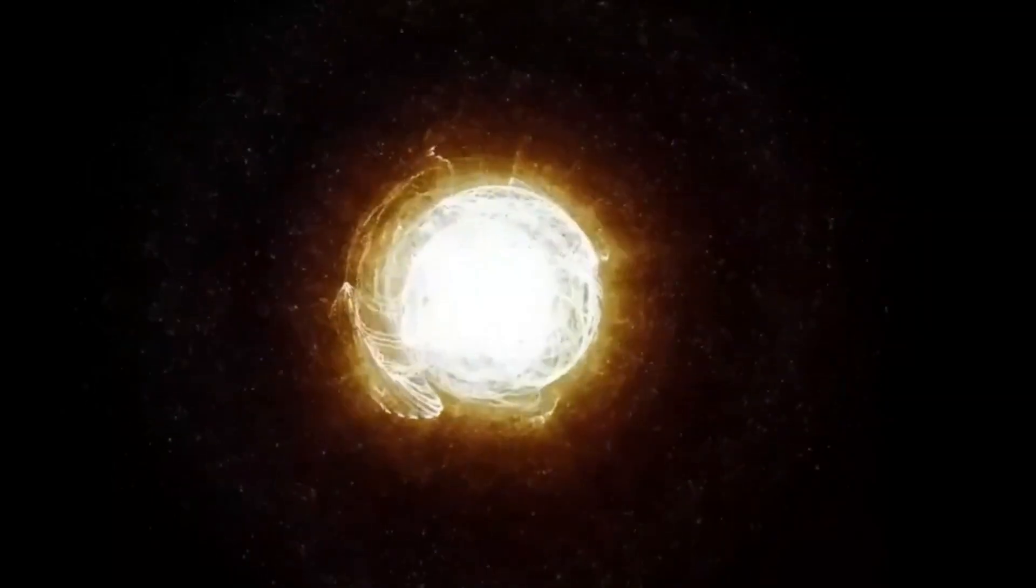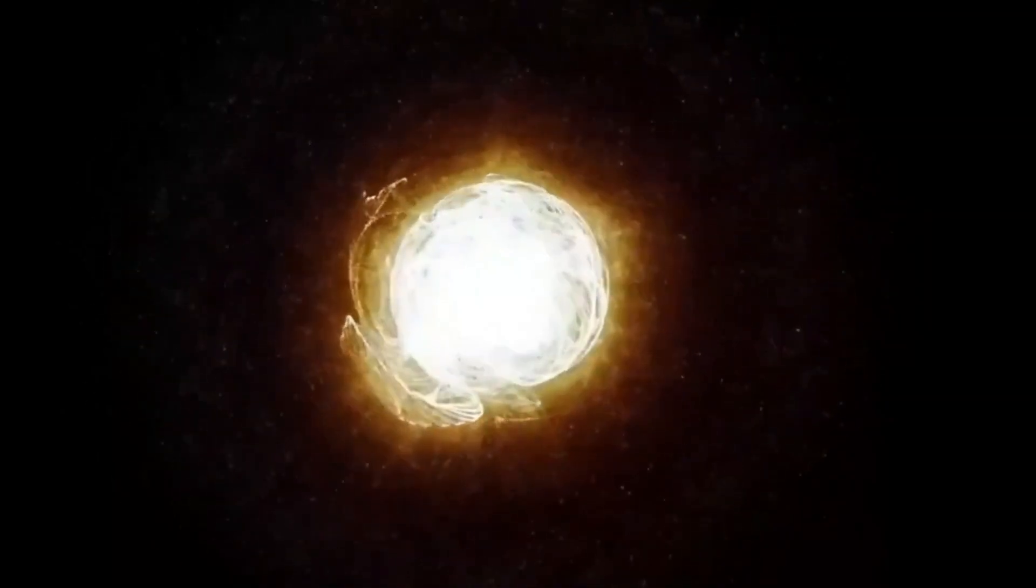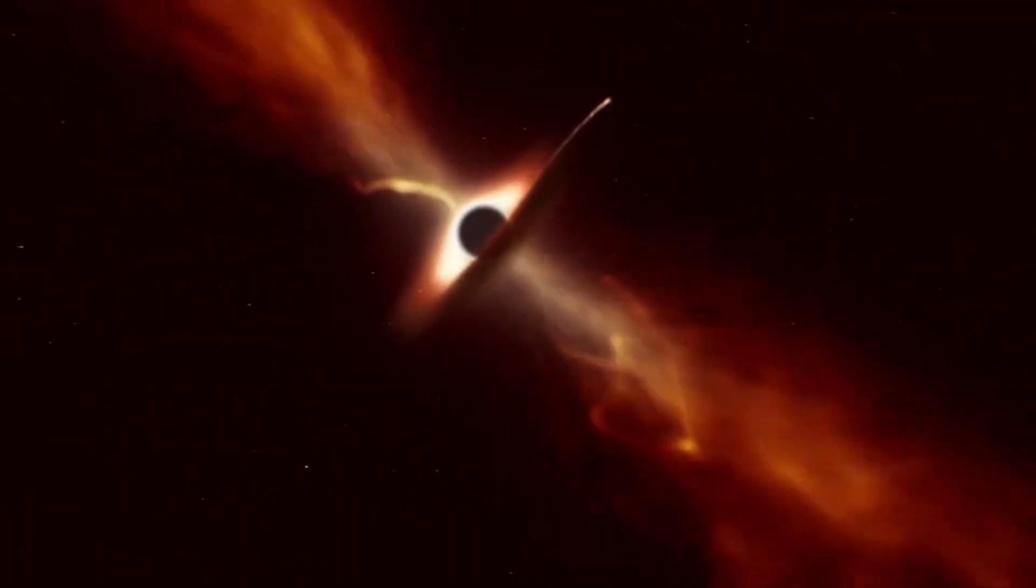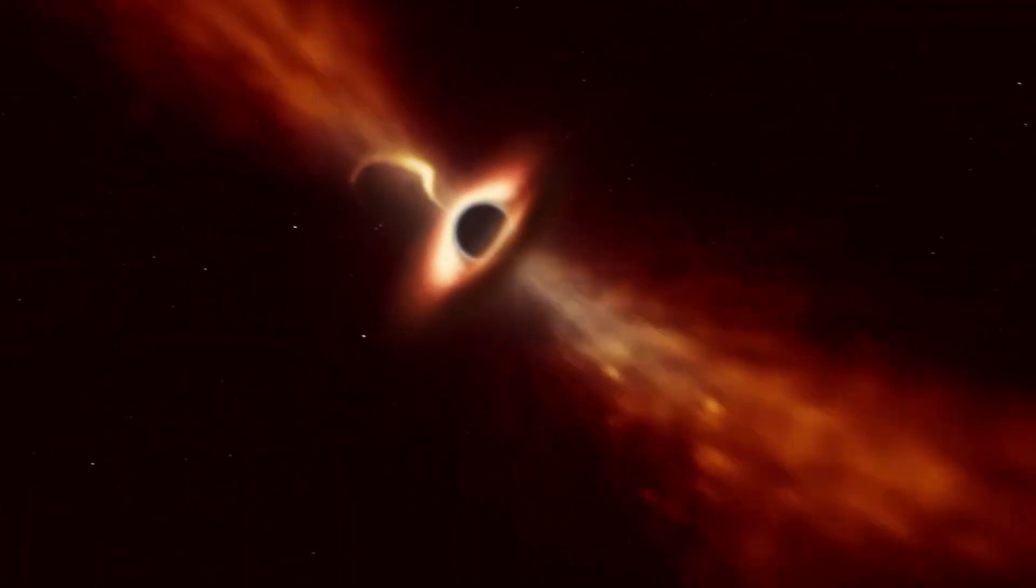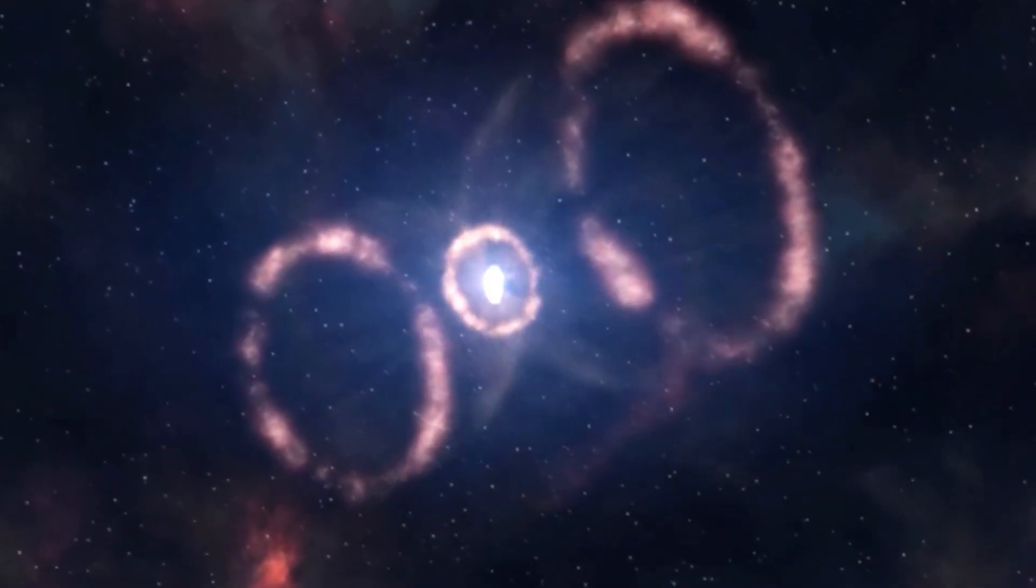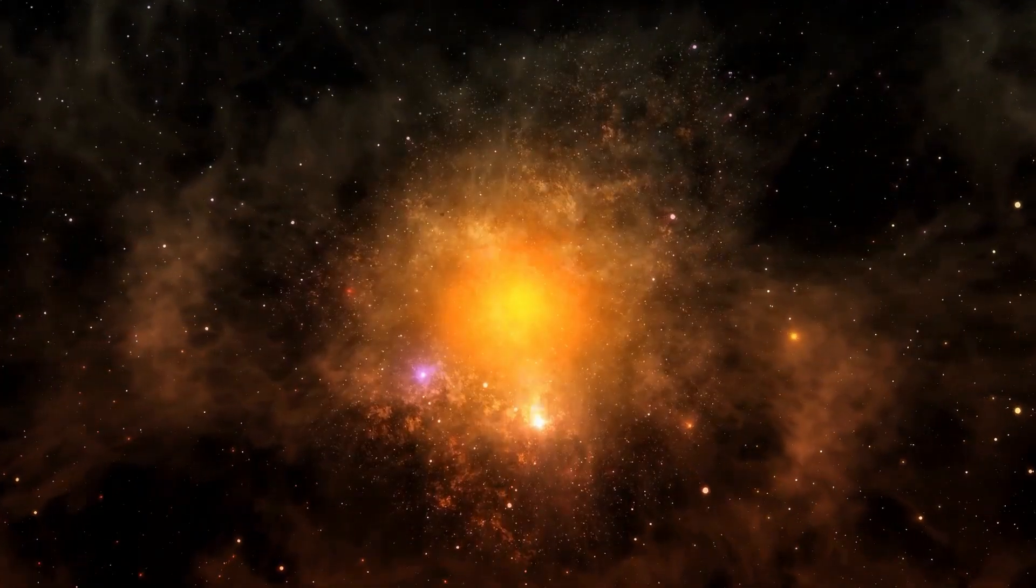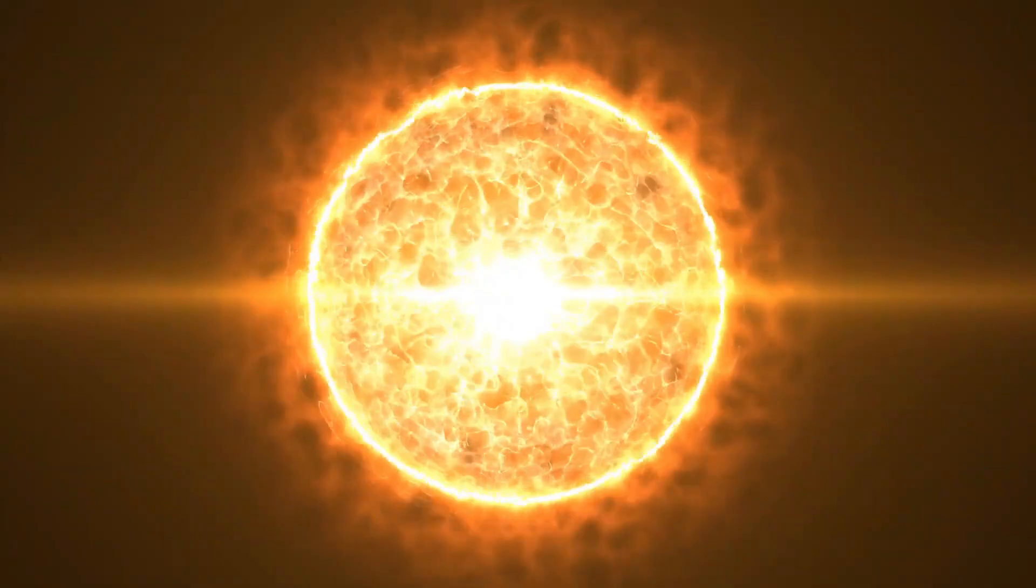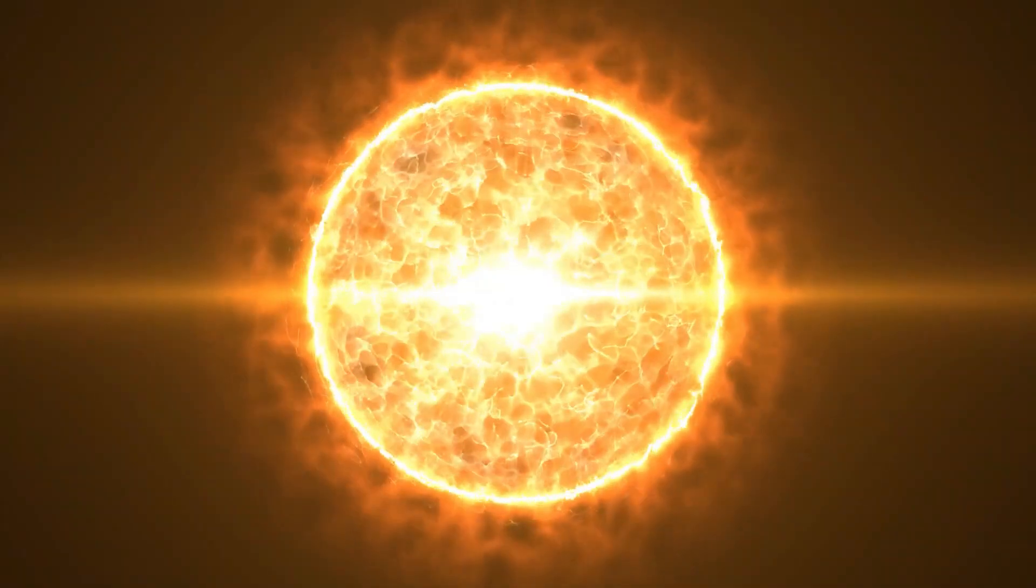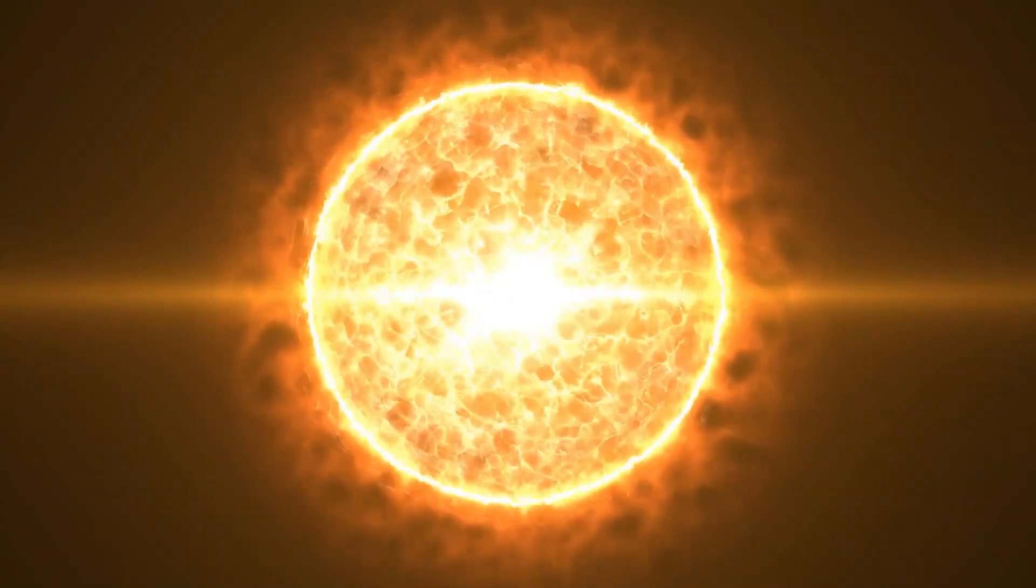Betelgeuse is not a smooth ball of plasma. Instead, it is a lumpy clump of hot gas bubbles covered in dust clouds that have burped out. This makes it hard to figure out how wide it really is. Finding the star's diameter is hard, but knowing how long Betelgeuse has left to live depends on its size.